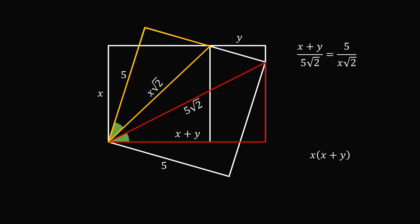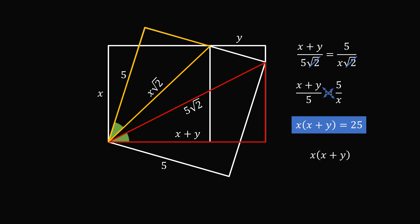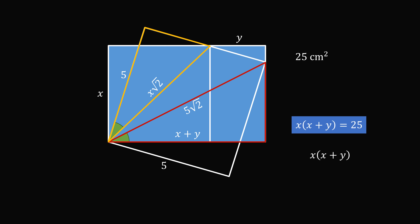This means (x + y) divided by 5√2 equals 5 divided by x√2. We can cancel the √2 on both sides, giving (x + y) / 5 = 5 / x. Cross-multiplying, we get x times (x + y) equals 25. But x times (x + y) is exactly what we wanted to solve for. So the combined areas equal 25 square centimeters — the same as the area of the tilted square with side length 5. And that's the answer.